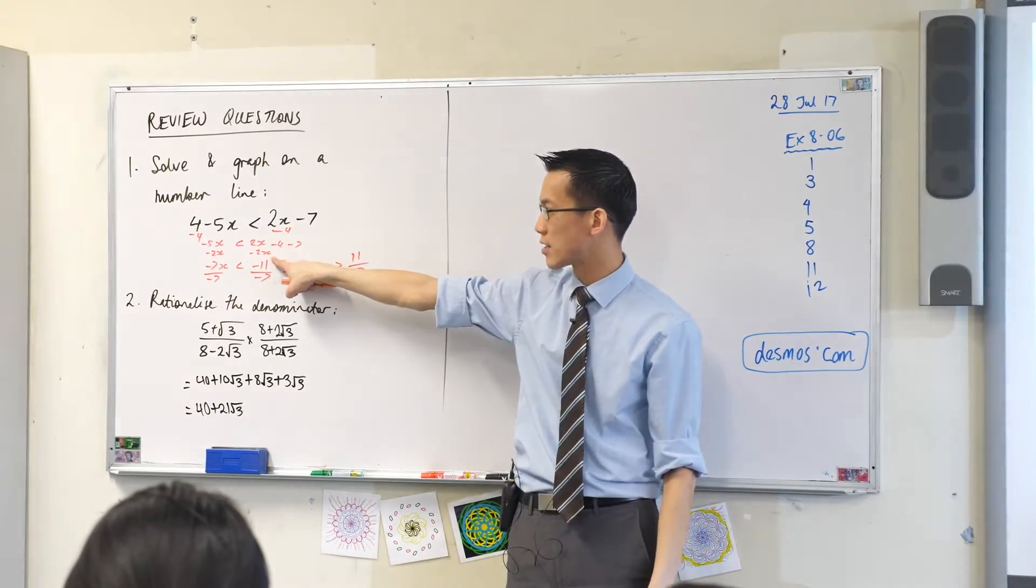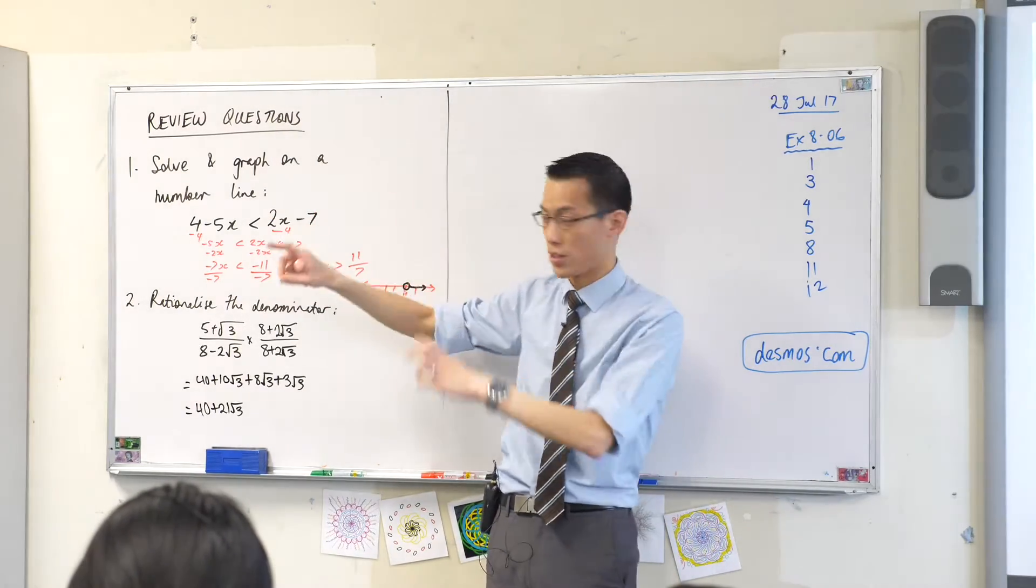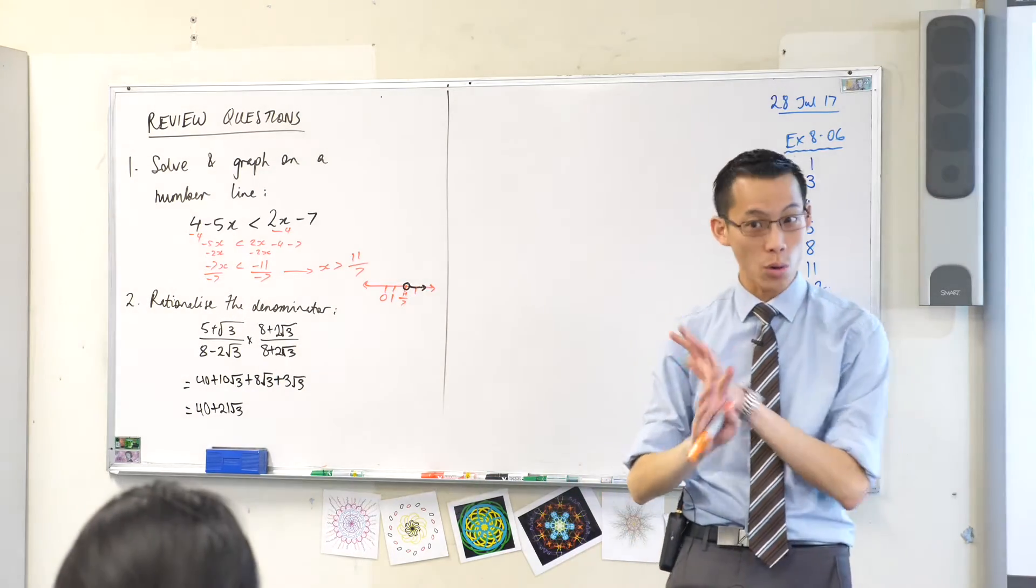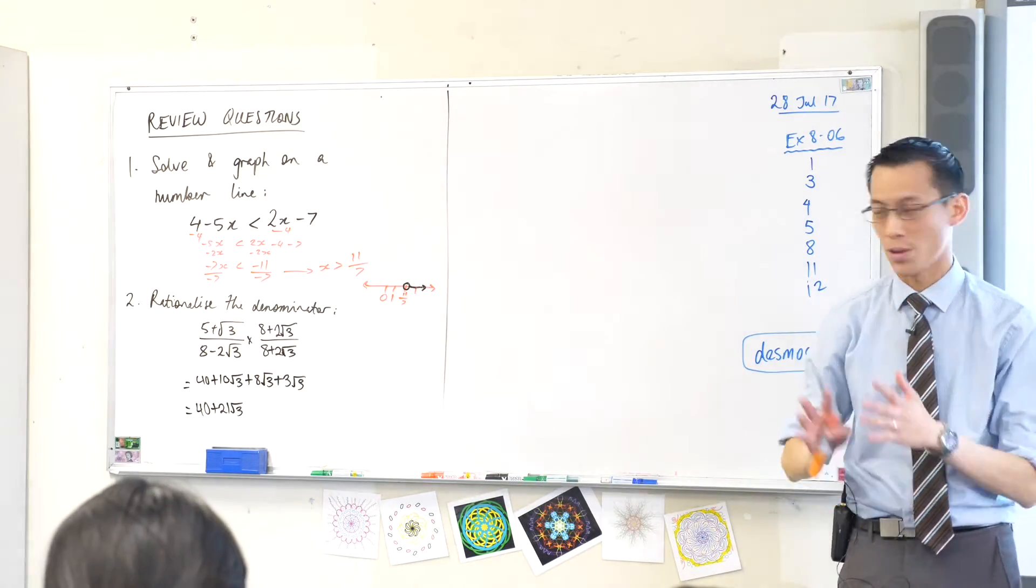After he's subtracted 4, you can see on the next line he's even said what he's done on every step. He's subtracting 2x from both sides, and that's also something you do in an equation, also fine.